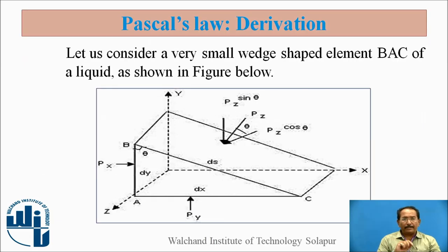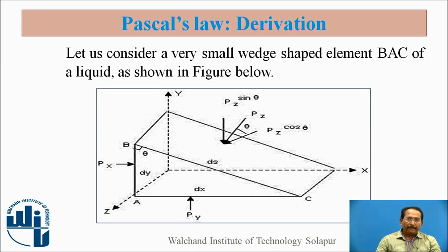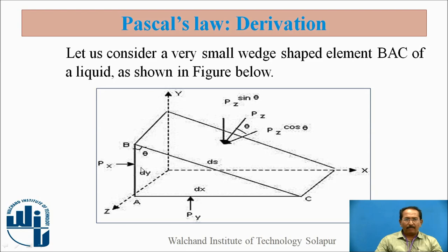Now we will see the derivation. For this particular derivation, we have taken a very small wedge-shaped element so that we can find three axes: x, y, and z axis. Let us consider a very small wedge-shaped element B, A, C of a liquid as shown in the figure. We can find the x-axis, y-axis, and z-axis on this element.